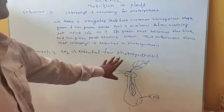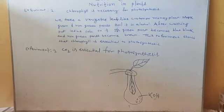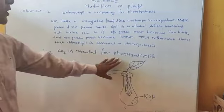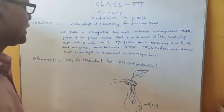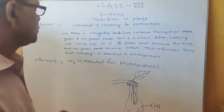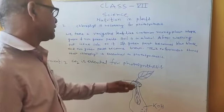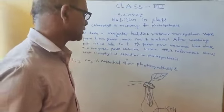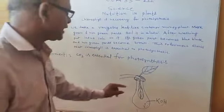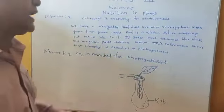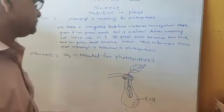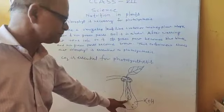The third experiment is: carbon dioxide is essential for photosynthesis. How can you show that carbon dioxide is essential for photosynthesis? We take a bottle, cover it with a cork, make a hole, and cut the cork in such a way that one leaf goes inside the bottle and another leaf goes outside the bottle. We put some KOH solution in this bottle.